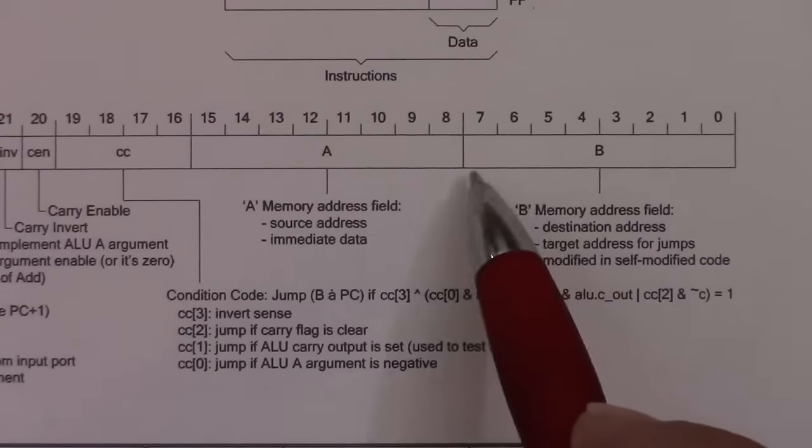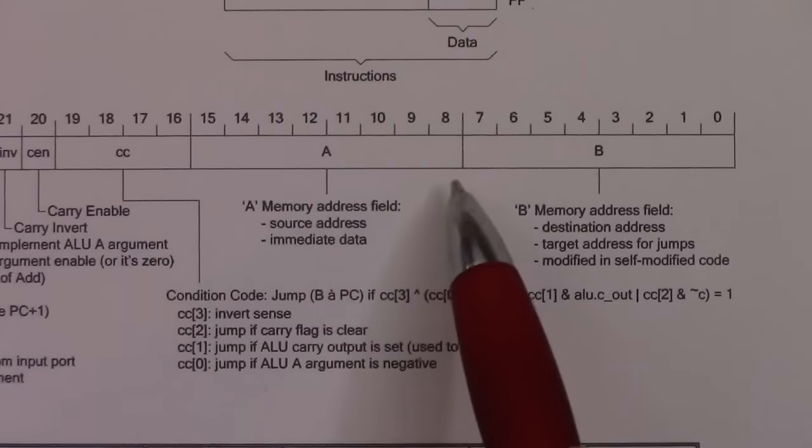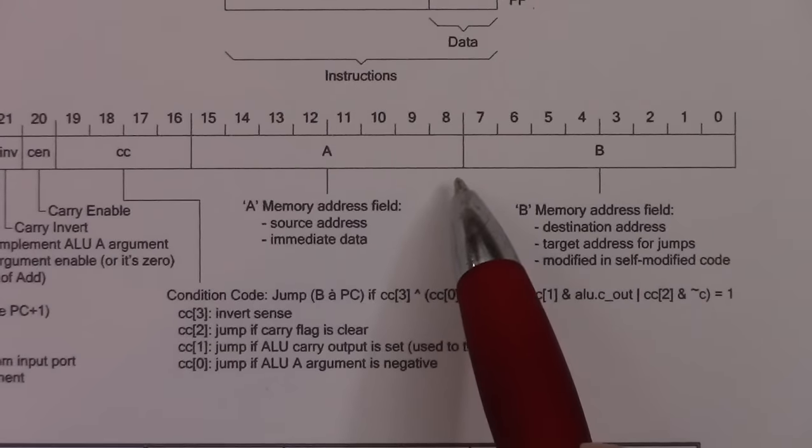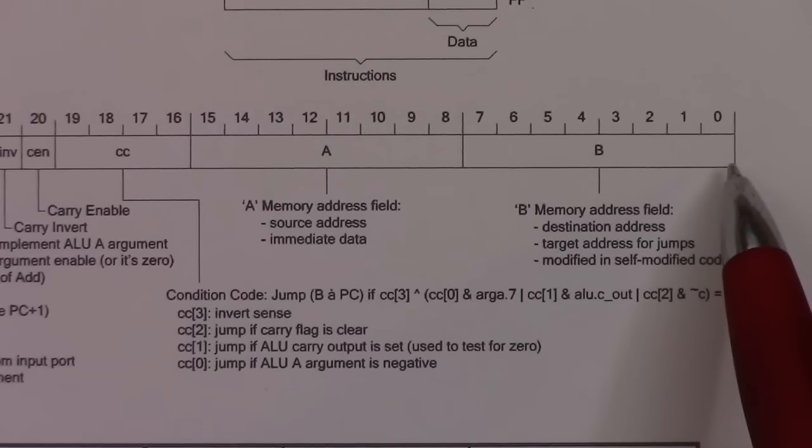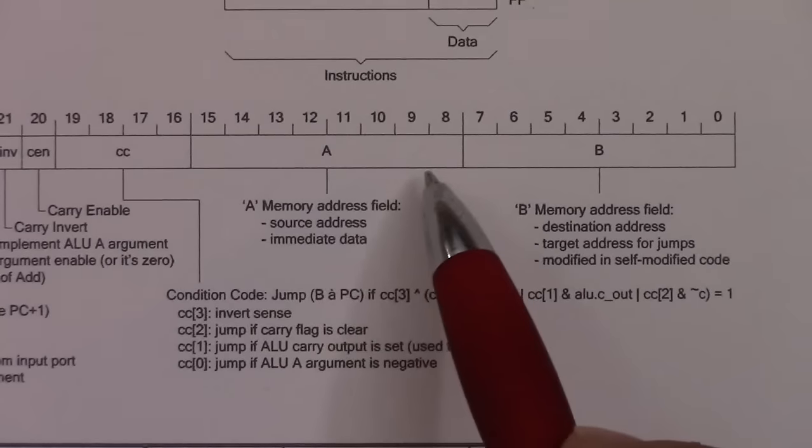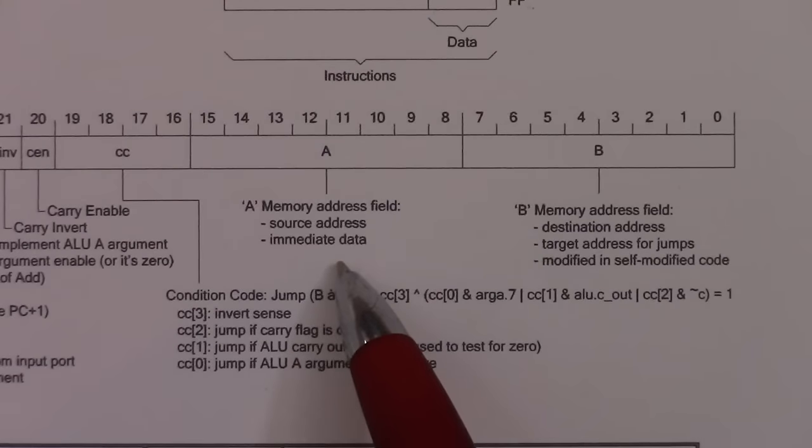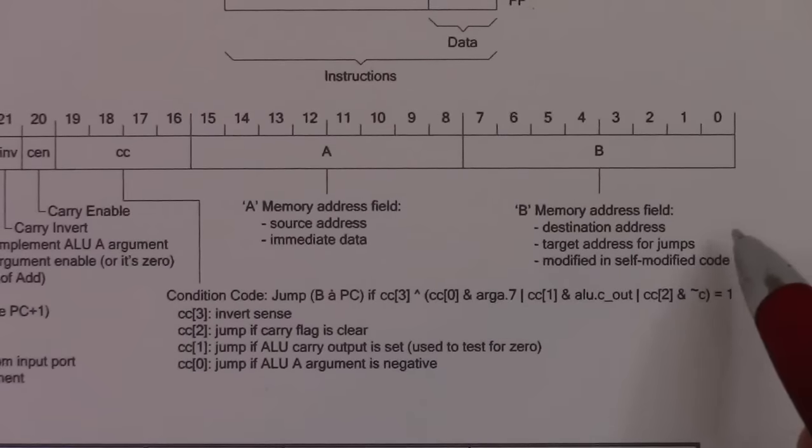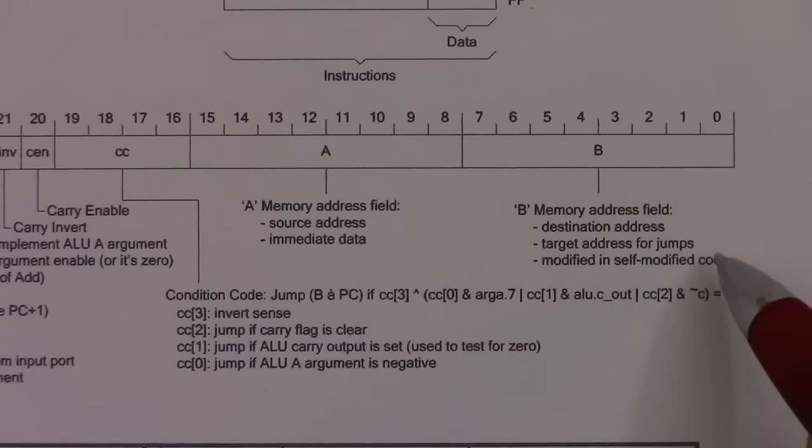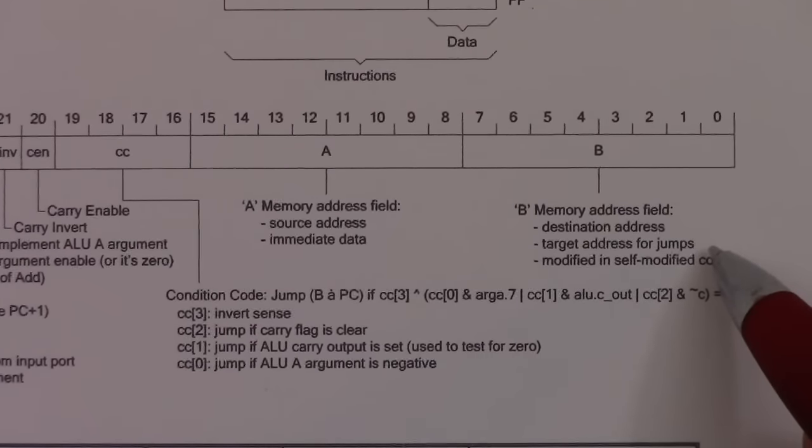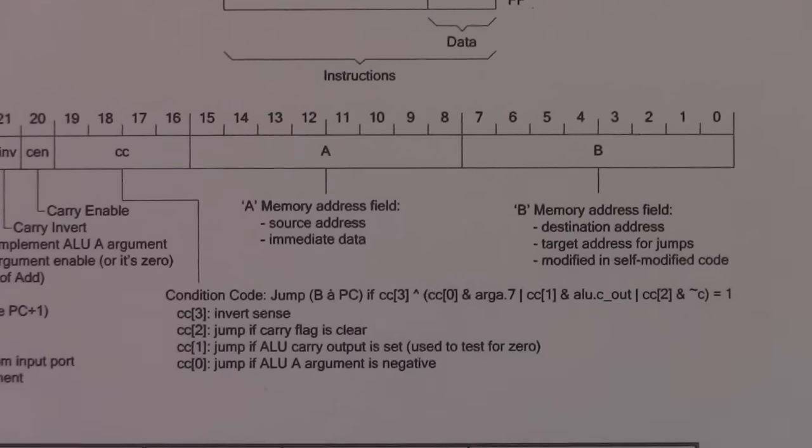The lower 16 bits contain two instruction operands. Basically, they are memory addresses. So 8-bits for one memory address, 8-bits for another memory address. Although the upper 8-bits can also be used as immediate data instead of being used as a memory address. And the lower 8-bits can also be used as the target address for jumps. And that's also important for self-modifying code. This is basically how we do subroutines.